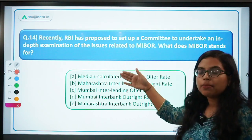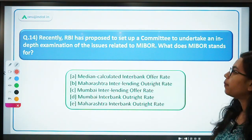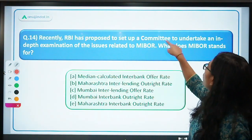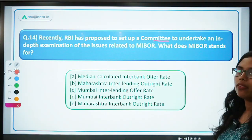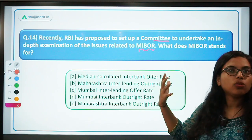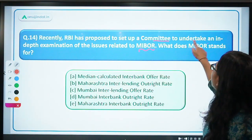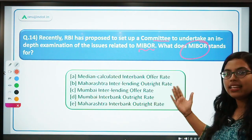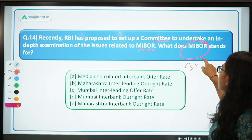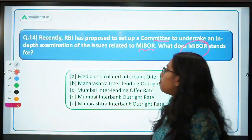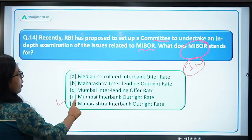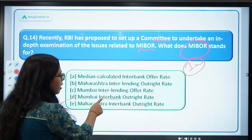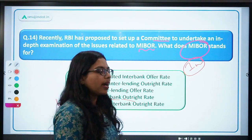RBI has proposed to set up a committee to undertake an in-depth examination of issues related to MIBOR. What does MIBOR stand for? Very simple, very logical question — and such questions are asked in exams. The correct answer is Mumbai Interbank Outright Rate. It is also sometimes called the Offer Rate — Mumbai Interbank Offer Rate and Outright Rate — this is known as MIBOR.